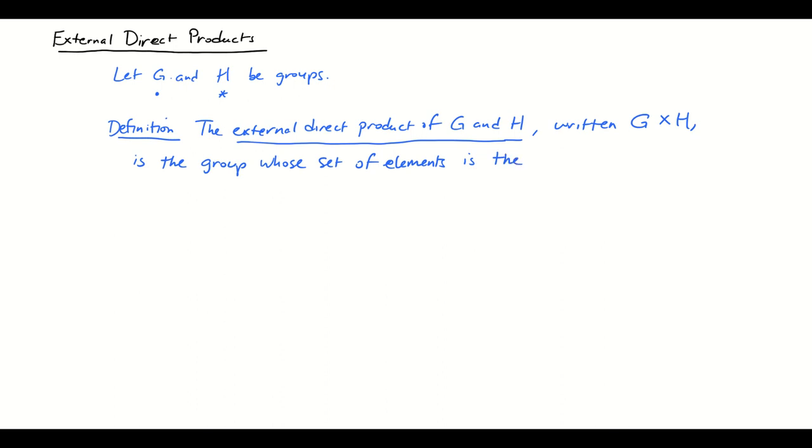Hence why we use that symbol, the Cartesian product G cross H, which is, as always, the set of all ordered pairs (g,h), where g belongs to G and h belongs to H. So that's the set of elements. And the operation is defined as follows.